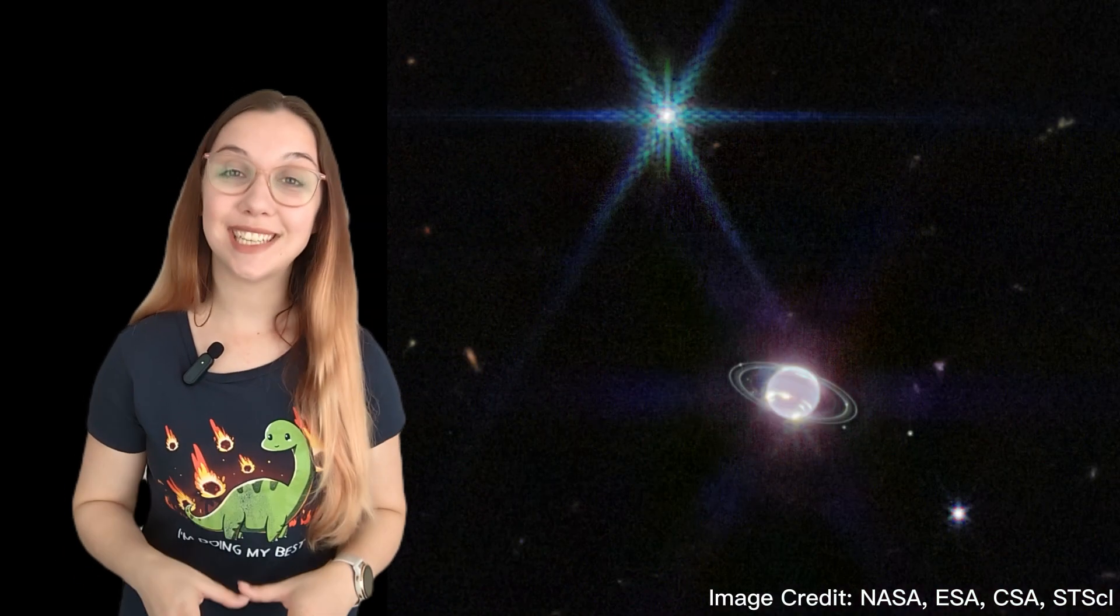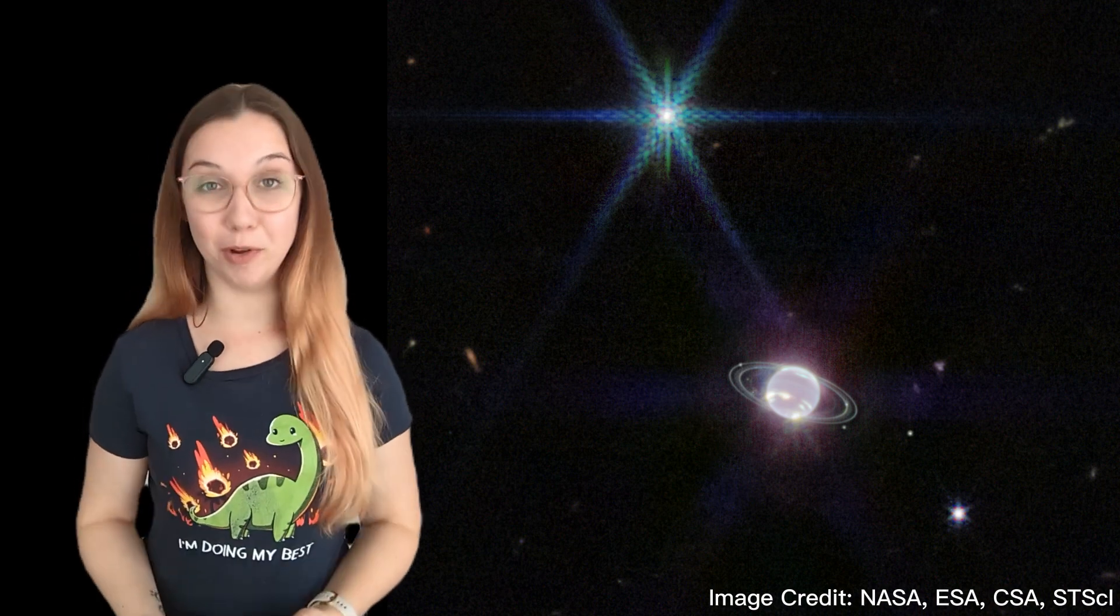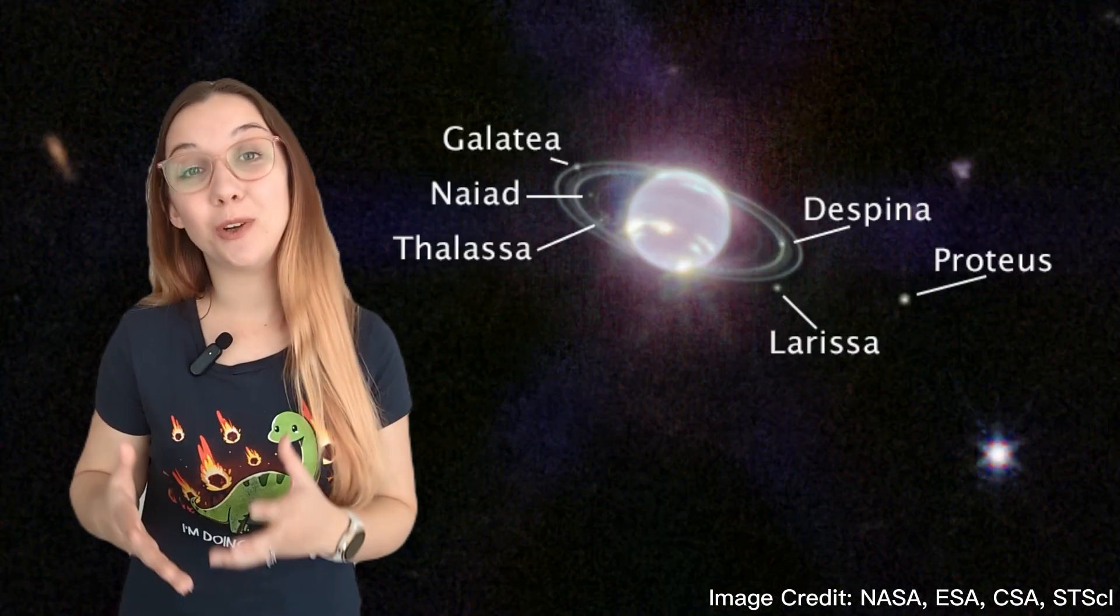Also in this photo are seven of Neptune's 14 known moons. Six are visible nice and close to Neptune. Can you guess where the seventh moon is?